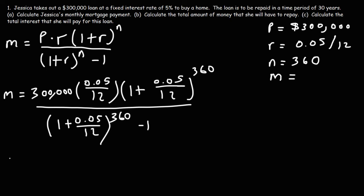So let's do this one step at a time. Let's take 300,000, multiply it by 0.05, and let's divide that by 12. You should get 1250. Next, let's calculate this portion. Type in what you see. So 1 plus 0.05 divided by 12. That's 1.00416 repeating. And then raise that to the 360 power.